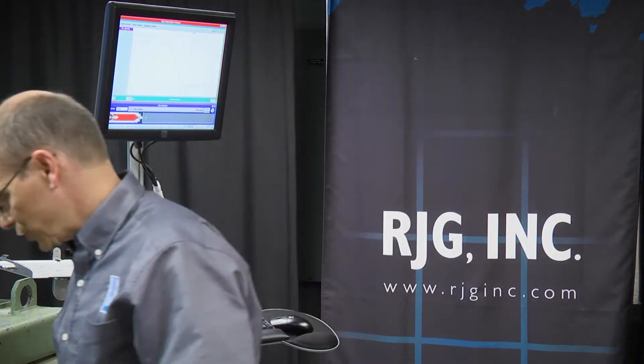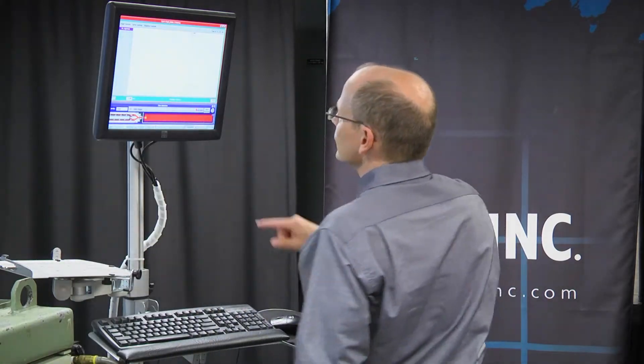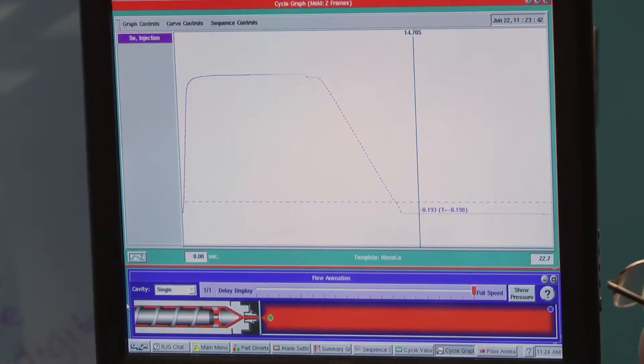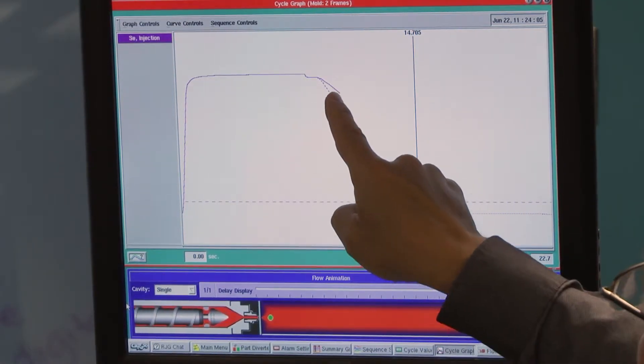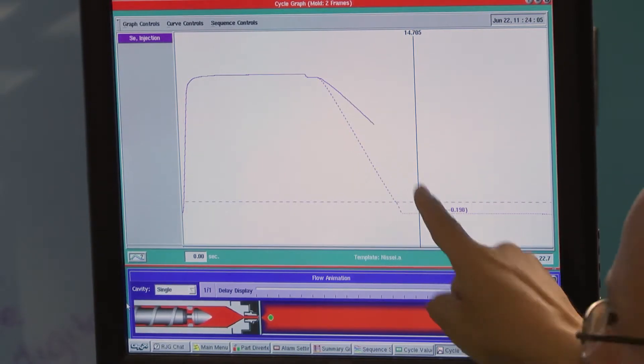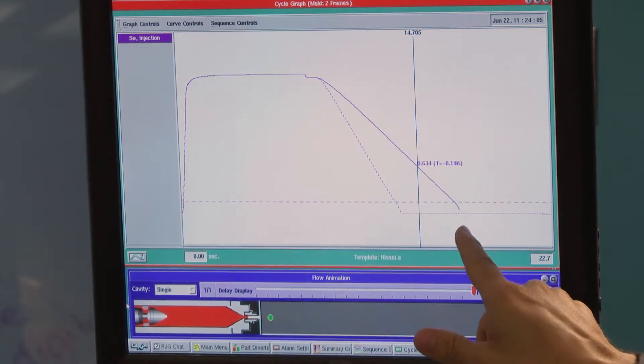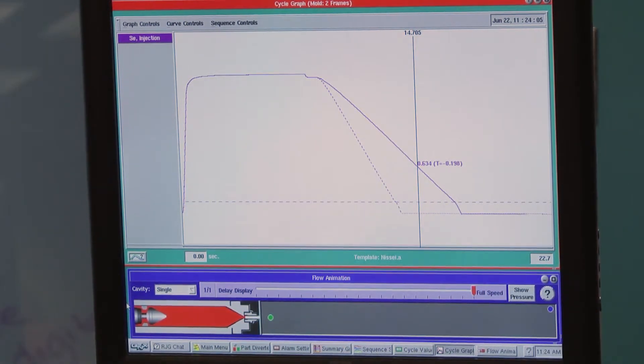So let's see how this can be useful. Let's change the screw recovery speed. So our fill speed remains the same. Our hold remains the same. But as we get to the end of screw run, we'll notice that it's taking much longer for the screw to recover, and that's because we've reduced our screw recovery speed.